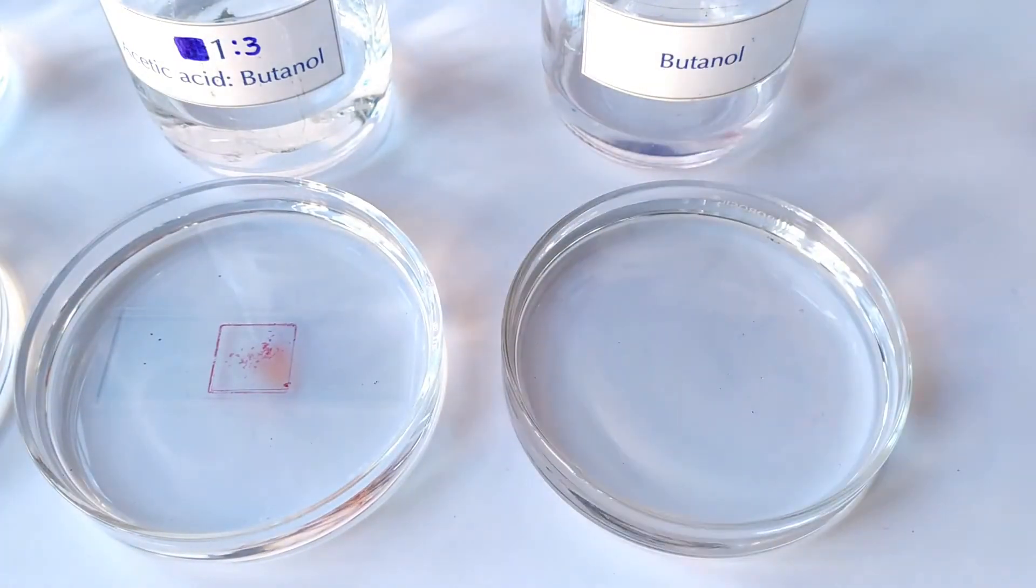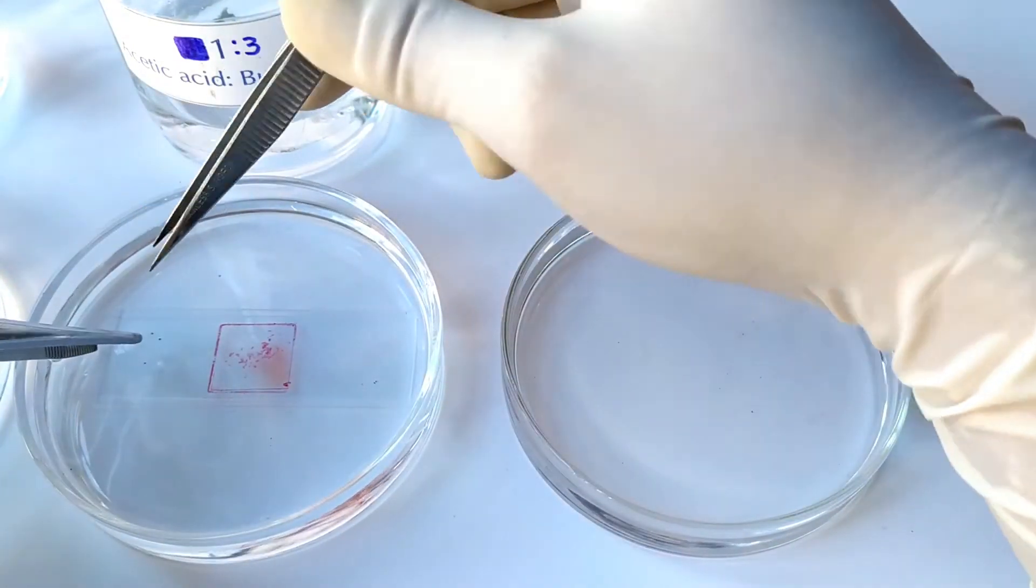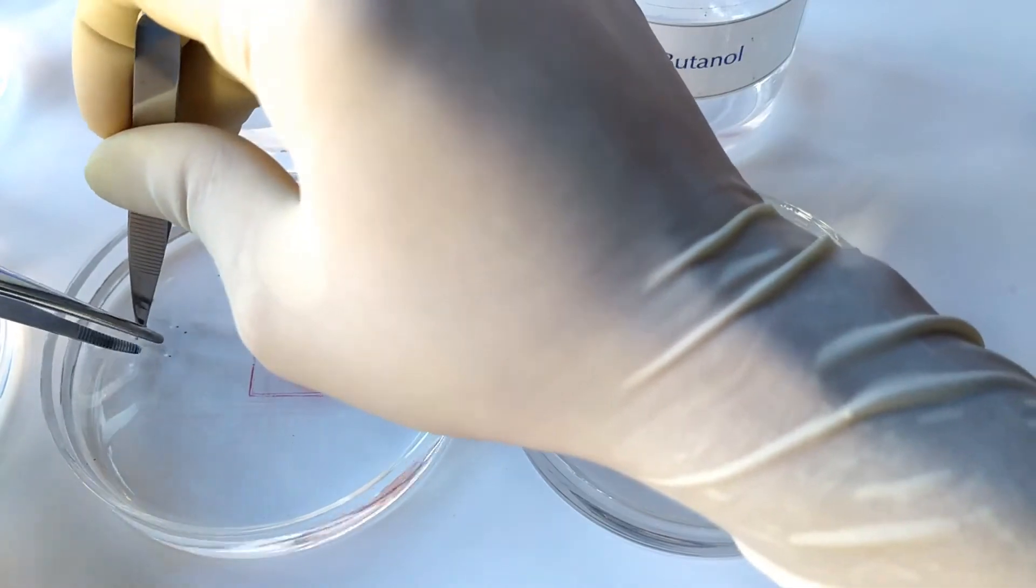Next, transfer the slide and cover slip into a third petri dish containing pure butanol and keep it for another 10 minutes.